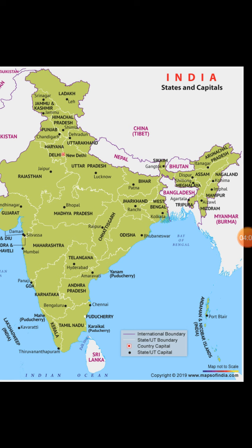These seven Northeast states — Arunachal Pradesh, Assam, Meghalaya, Tripura, Nagaland, Manipur, and Mizoram — are also known as the Seven Sisters. Remember the names of these states along with their capitals, as this is a very important exam question. You must also remember all Indian states and union territories with their capitals. Revise the topic well, do practice, and remember all the things we have discussed today.